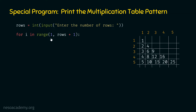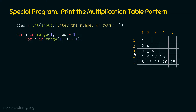The inner for loop looks like: for j in range(1, i + 1). The second argument is i plus one because the column number depends upon the row number. If we are at row number five, we stop at column number five; if we are at row number three, we stop at column number three. Hence i plus one is provided as the second argument to the range function.